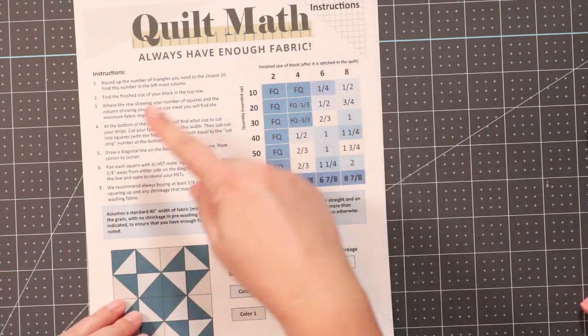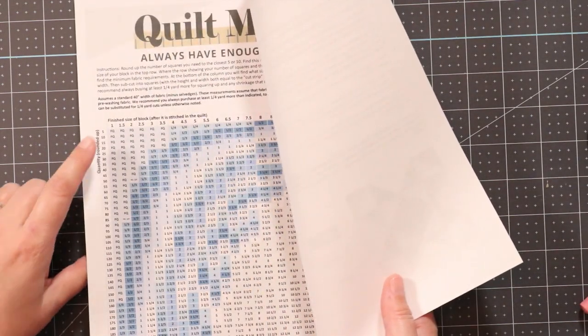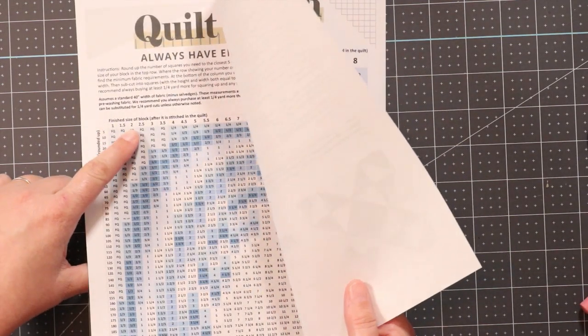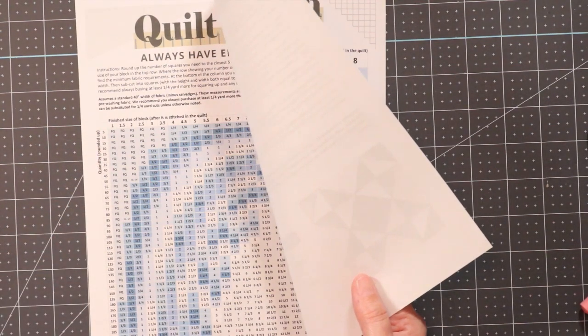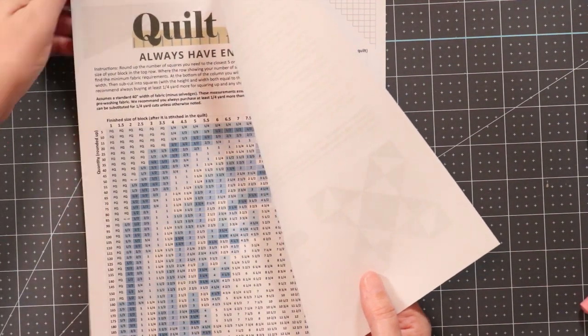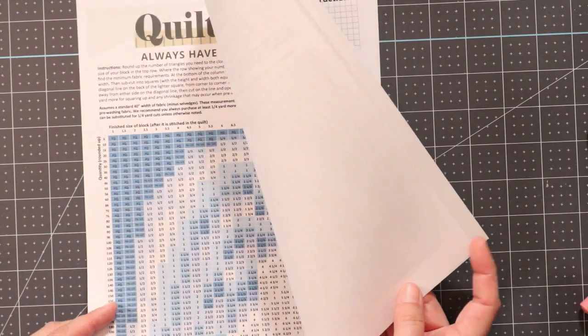These are the instructions that will take you through how simple it is to use the quilt math. There's a full sheet going in half inch increments for finished blocks, and going from 5 all the way to 205 unit increments for how many units in first squares and half square triangles.